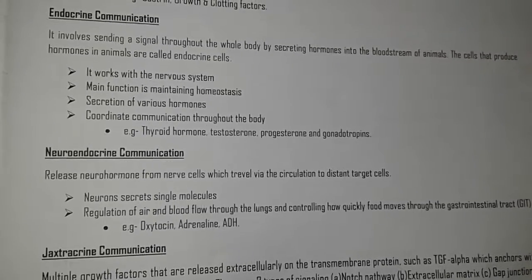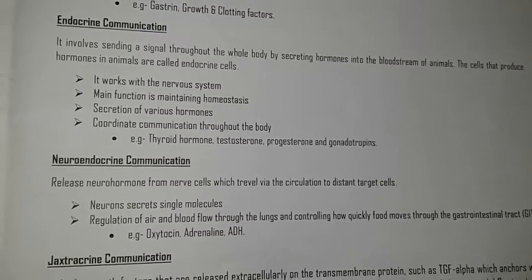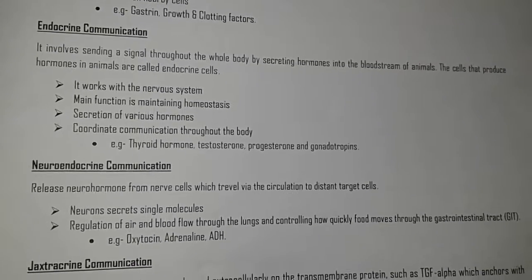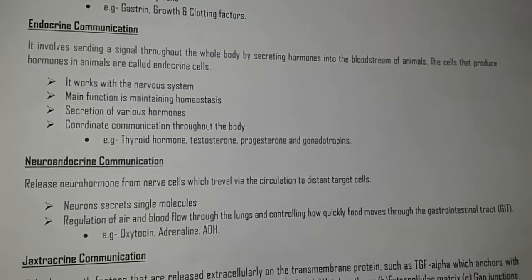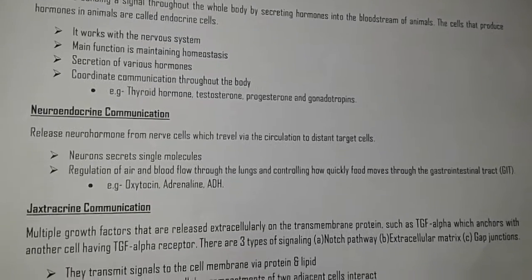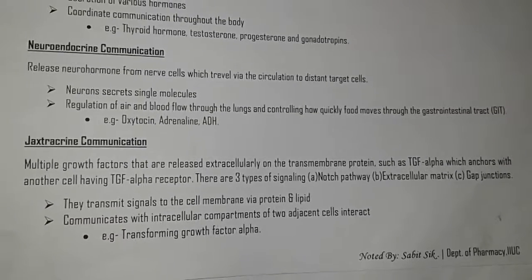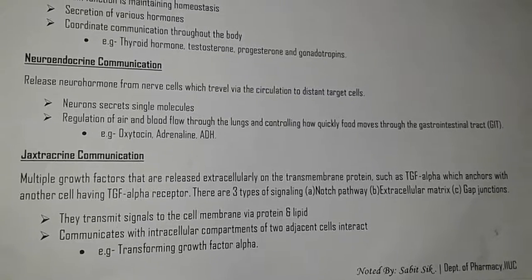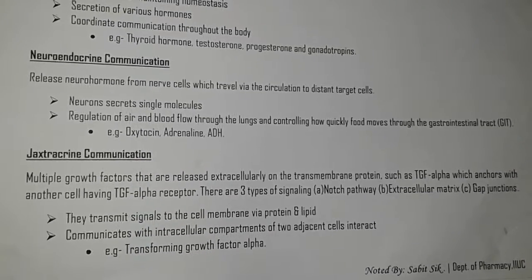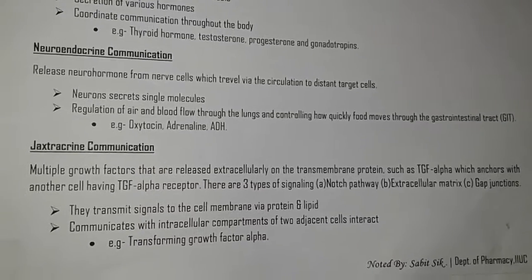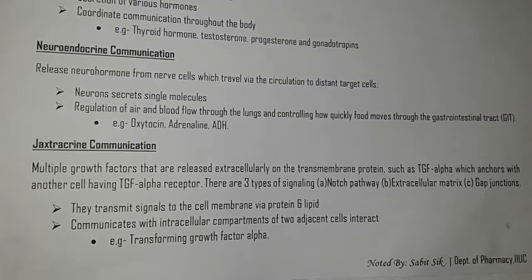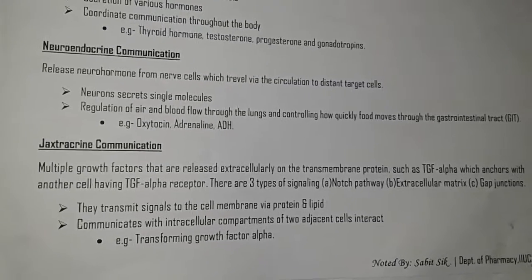Neuroendocrine communication: releases neurohormones from nerve cells, which travel via the circulation to distant target cells. Neurons secrete signal molecules. Functions include regulation of blood flow through the lungs and controlling how quickly food moves through the gastrointestinal tract. Example: oxytocin, ADH. Juxtacrine communication: multiple growth factors are released extracellularly on transmembrane proteins such as TGF-alpha, which interact with another cell having TGF-alpha receptors. Three types of signals: extracellular matrix, gap junction. Function: transmits signals to the cell membrane via protein and lipid; communicates with intracellular compartments of two adjacent cells. Example: transforming growth factor alpha.